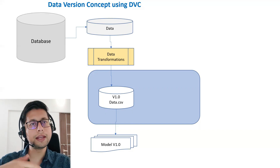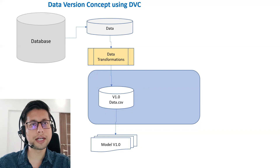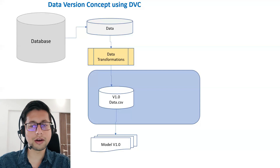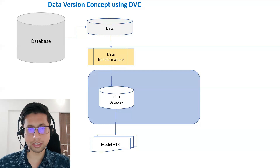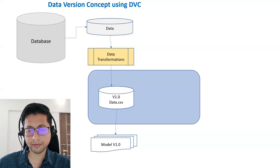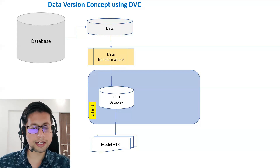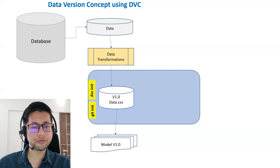Before we go with fine tuning and get a newer version of data, the expectation is to version the current version of data so that if you want to reproduce it, you can easily do so. I have explained reproducibility in my previous video — if you have any doubt, please watch that one. To version this data.csv, we need to initialize git in your current working directory and also initialize DVC.